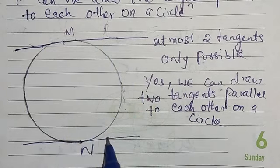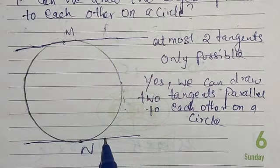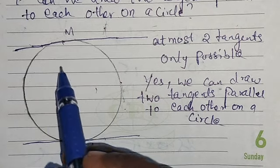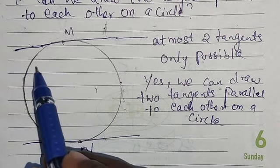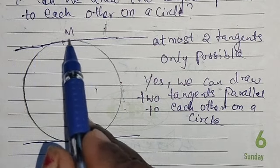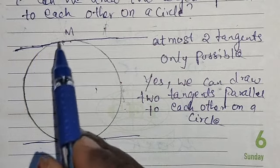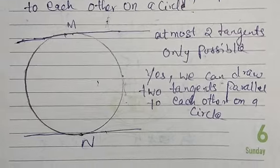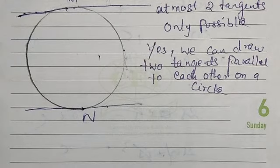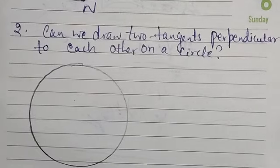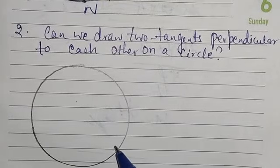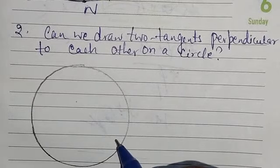A tangent: if a line touches the external circumference of a circle at only one point, it is called a tangent to the circle. Second question: can we draw two tangents parallel to each other on a circle?